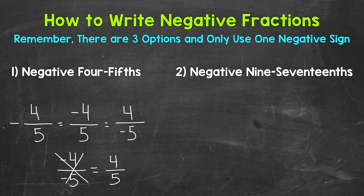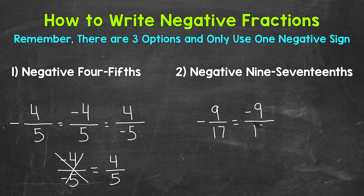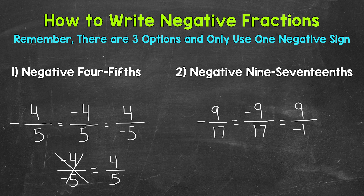Let's move on to number two and do another quick example — negative nine-seventeenths. We can write the negative sign in front: negative nine-seventeenths. We can write the negative sign with the numerator, the top number: negative nine-seventeenths. Or with the denominator: negative nine-seventeenths.